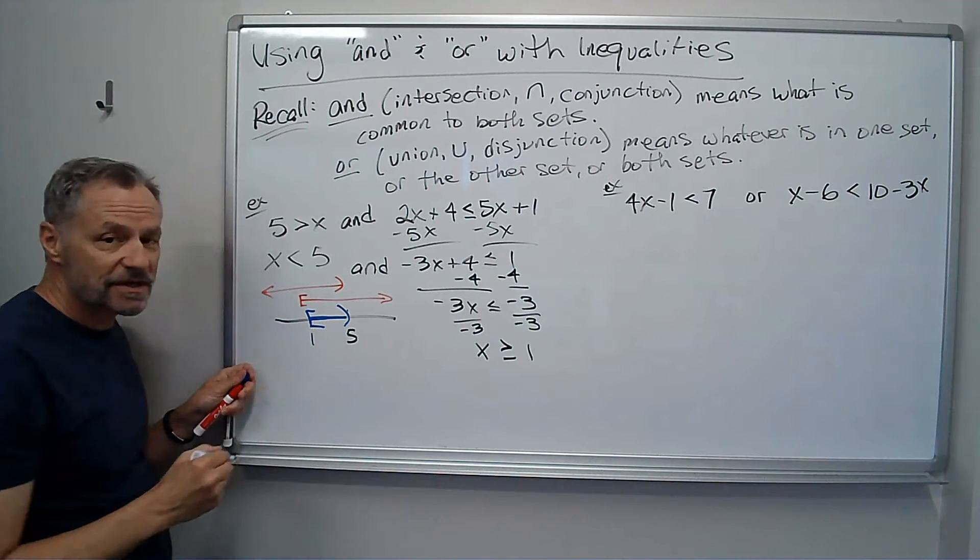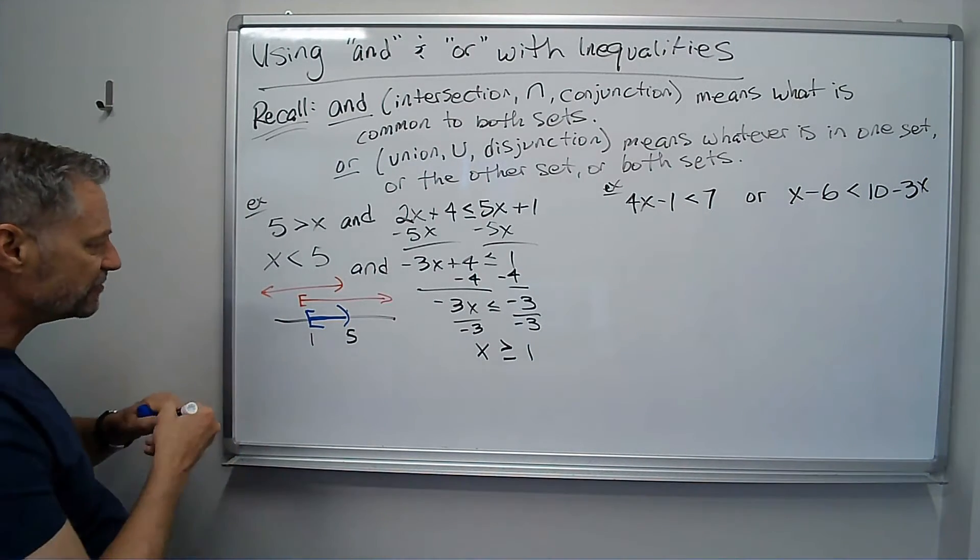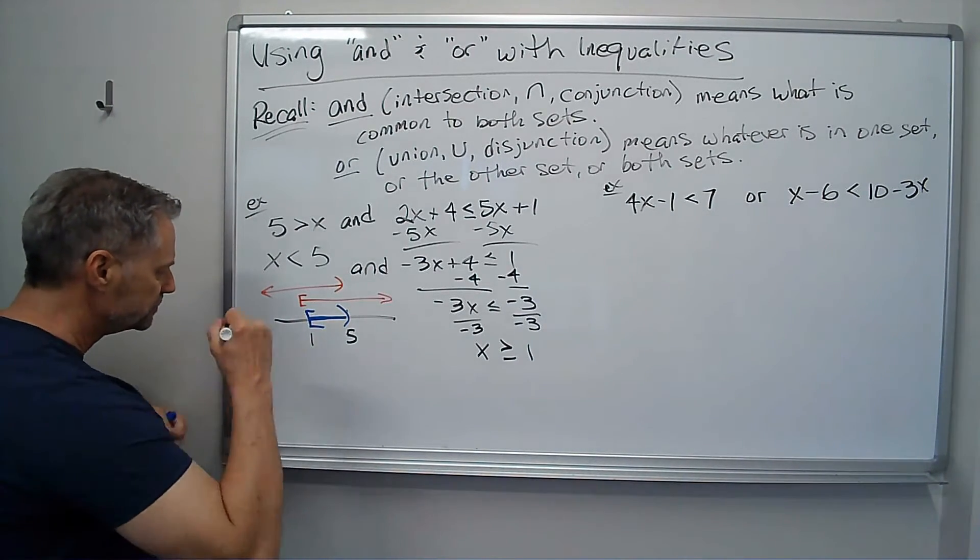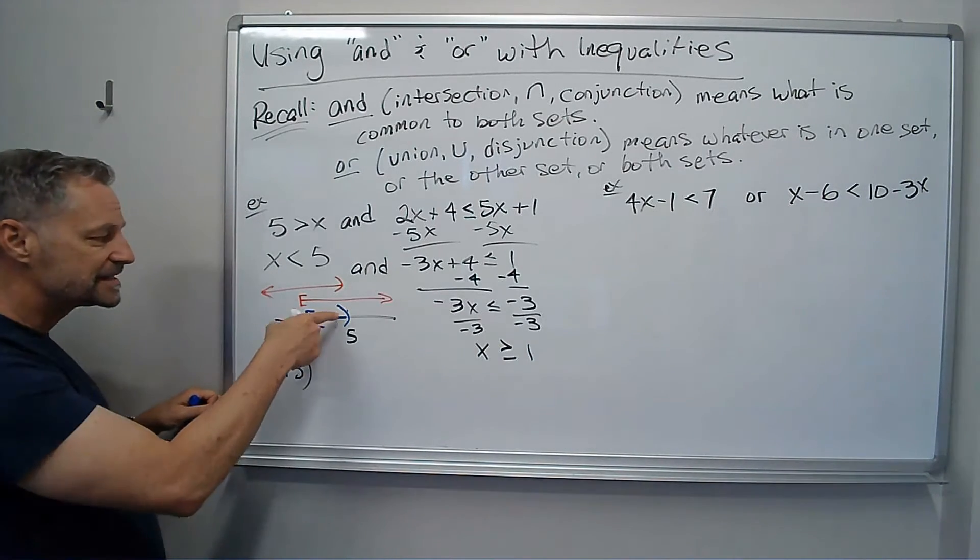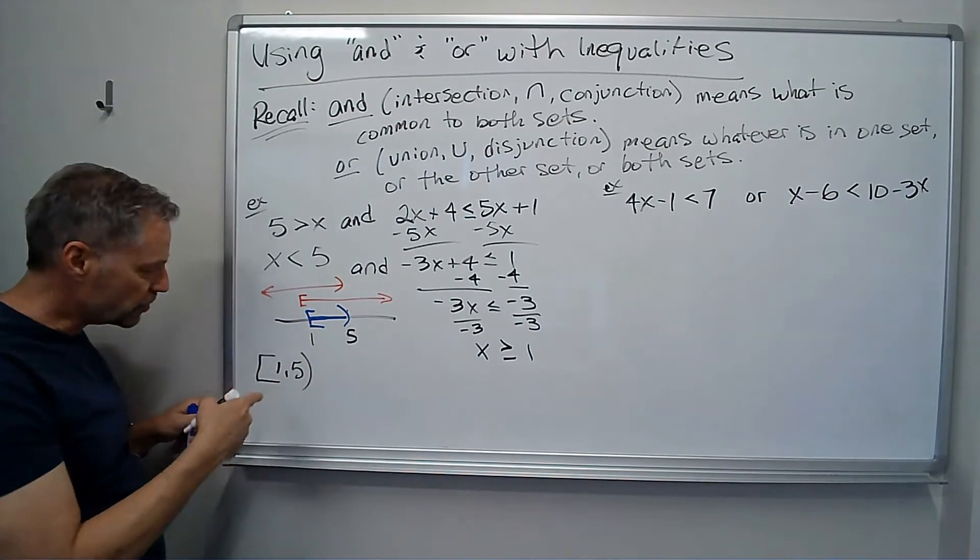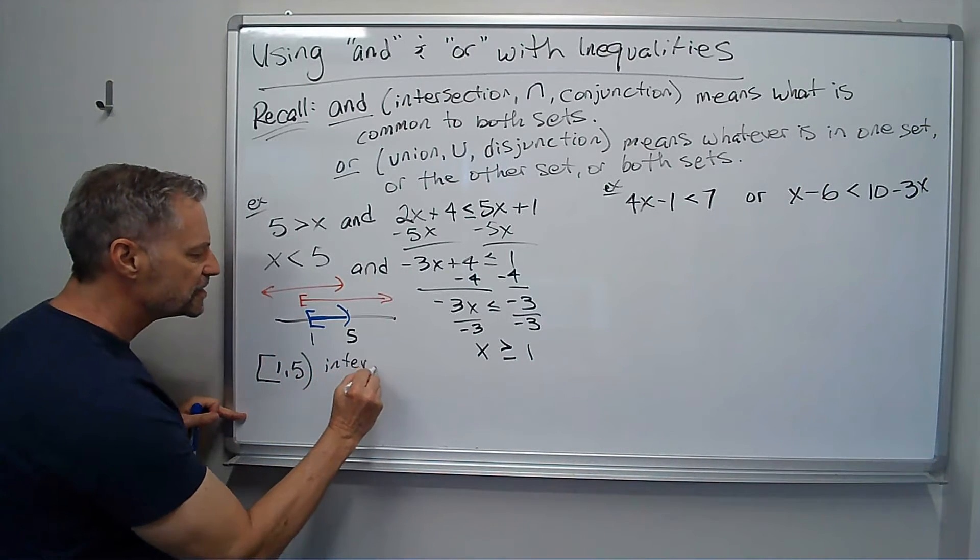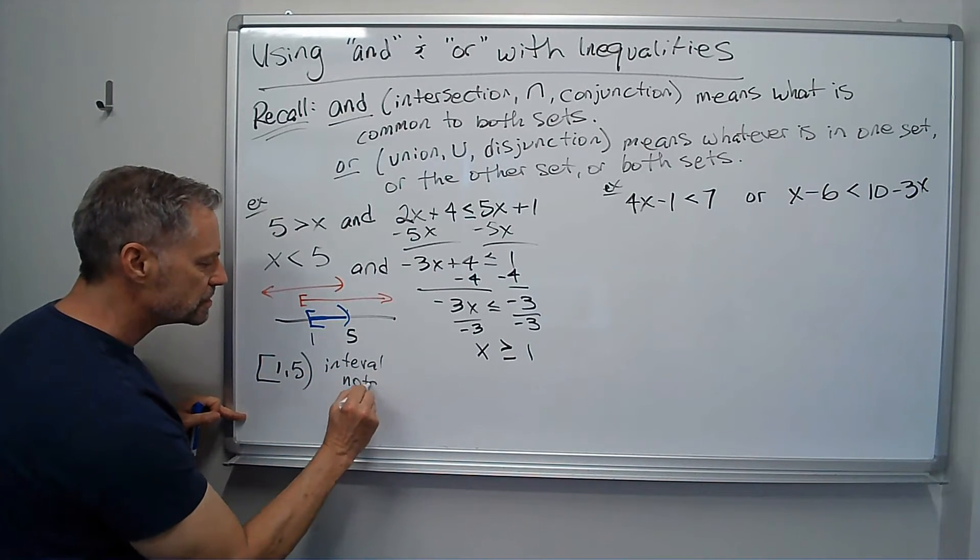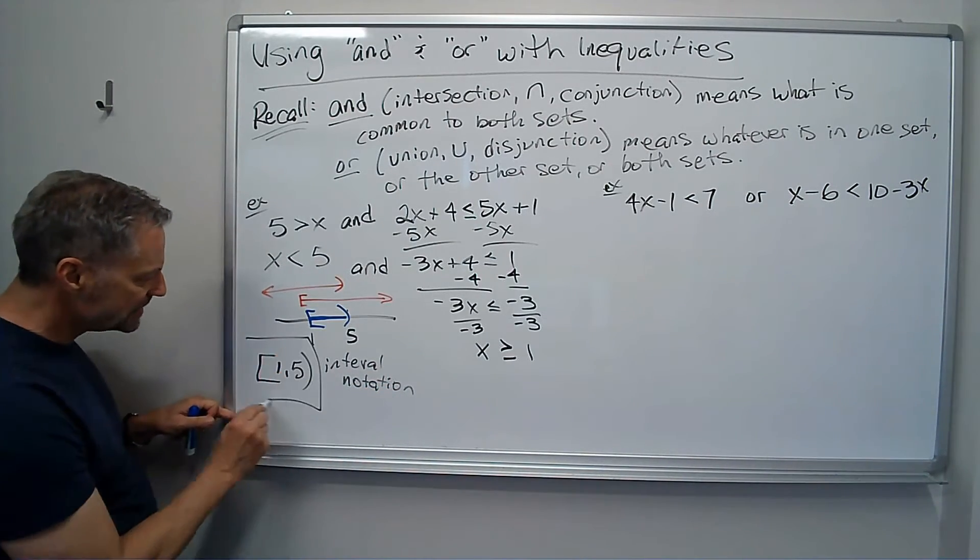Bracket on this side, parentheses on this side. So that leads right to an interval notation of 1 to 5. Same picture that we had with the graph, that's my interval notation. I'm going to leave it that way, interval notation. That's my answer.